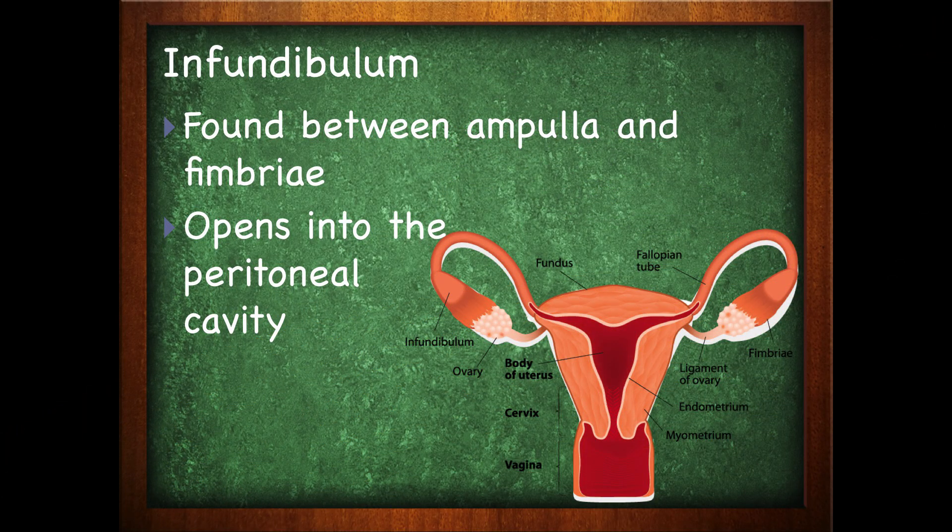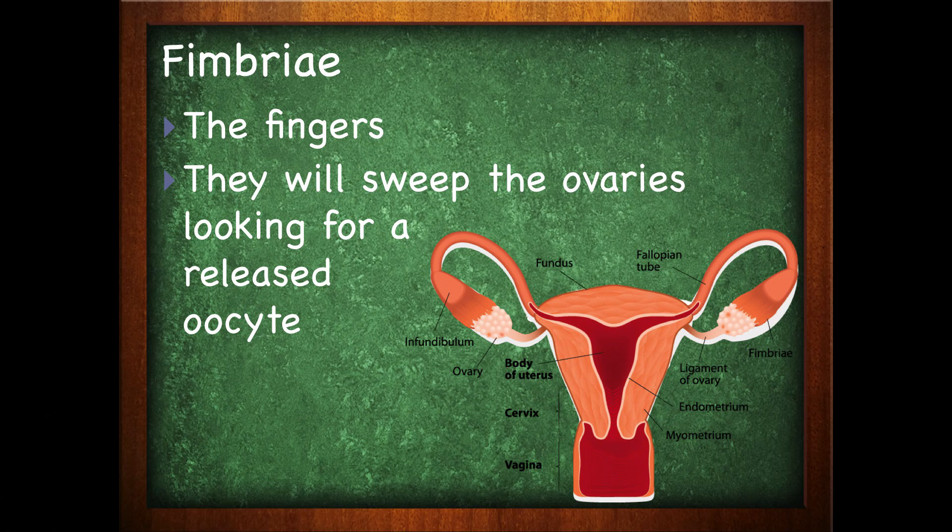Then we have the infundibulum, which is found between the ampulla and the fimbrae. It opens into the peritoneal cavity. Interestingly, the tube is not directly fused to the ovaries — there's actually a gap, an opening, between the fallopian tubes and the ovaries. Then we have these little finger-like structures called fimbrae that will sweep the ovaries looking for a released oocyte. Every month when the ovary releases an egg, these fimbrae caress the ovaries so the egg can enter the uterine tubes and ultimately the uterus.